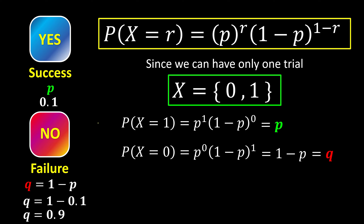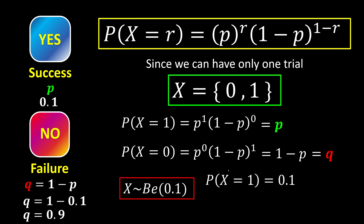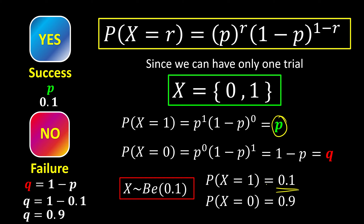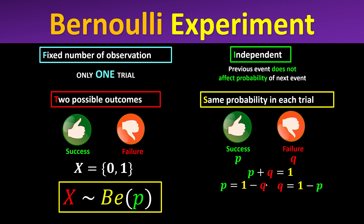Let's have an example where the probability of success is 0.1. The probability of failure is therefore 0.9. We write: X ~ Bernoulli(0.1). The probability of getting one success is simply p = 0.1, and the probability of getting zero success is q = 1 − p = 0.9.